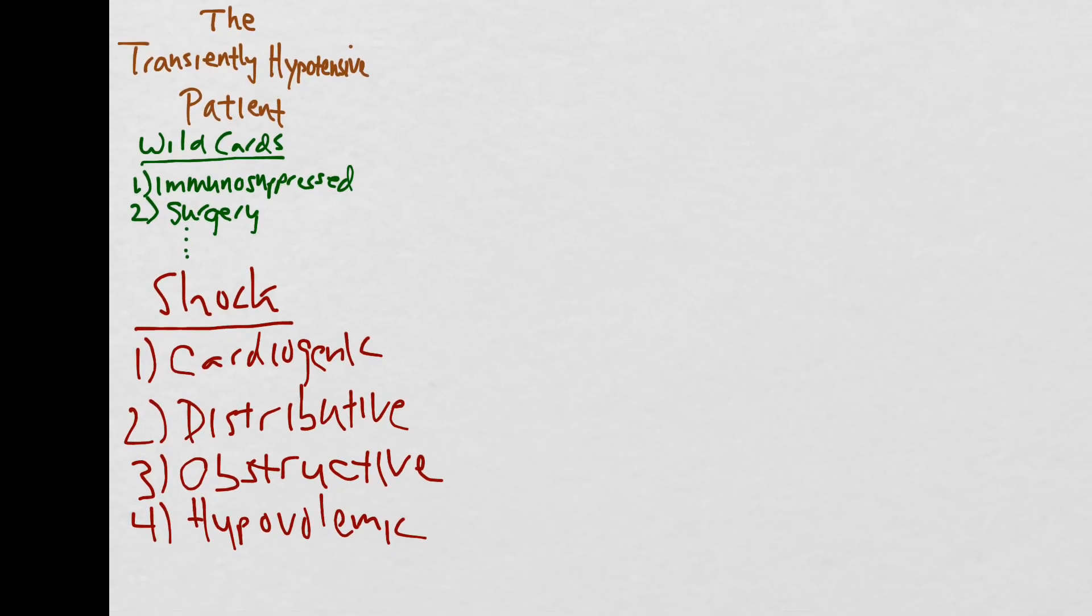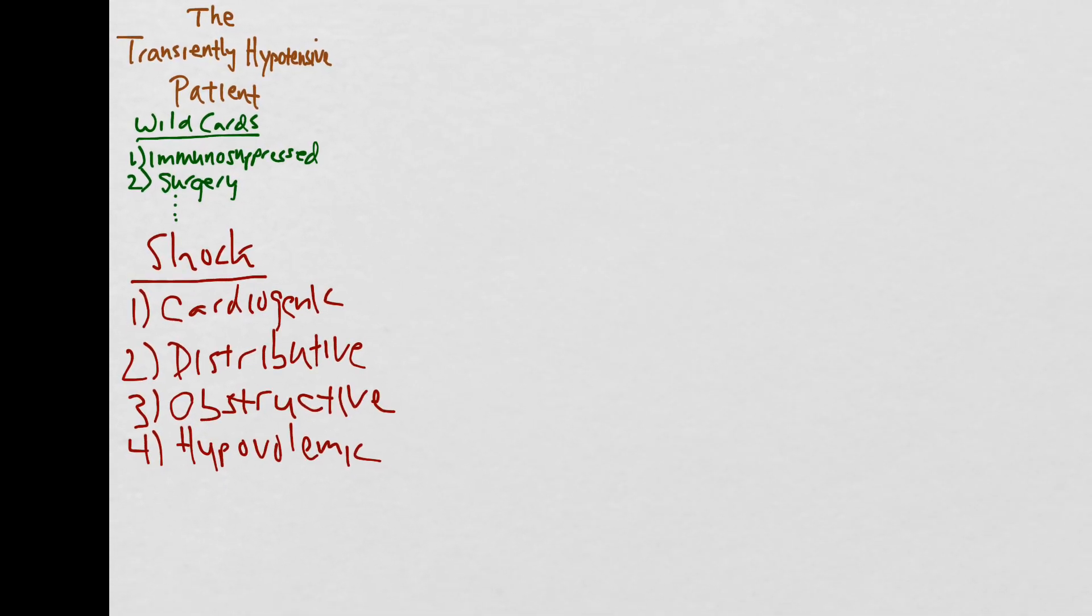And finally, the last type of shock that we'll talk about will be neurogenic shock. Did your patient sustain some type of trauma that disrupted his or her sympathetic chain? Although that type of history should come out during the interview, it's always just something good to consider.